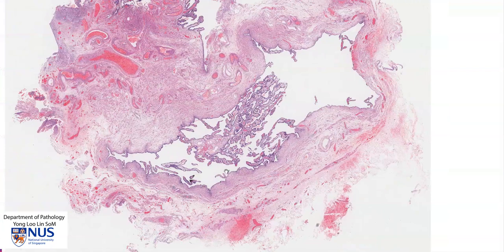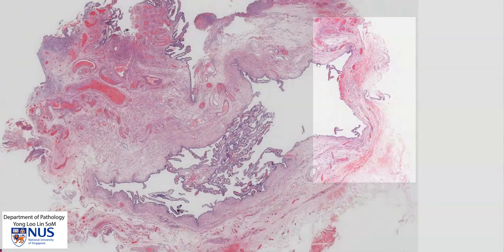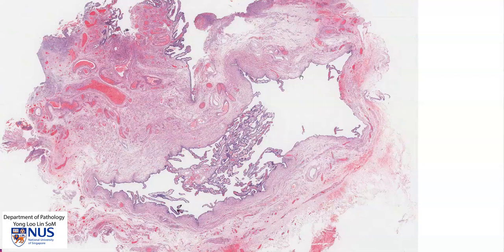In summary, this is an example of hydrosalpinx where we have a dilated fallopian tube lumen filled with fluid. In some areas there is thinning of the tubal wall with attenuation of the smooth muscle layer, and we also have flattening and loss of the tubal mucosal plicae. Thank you.